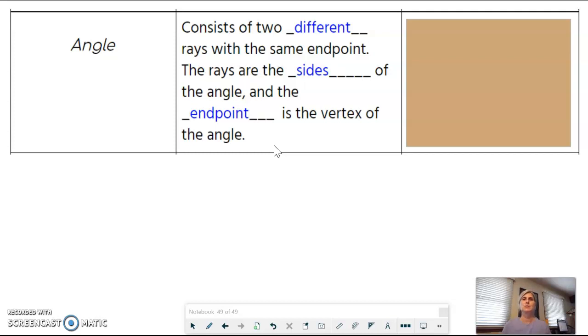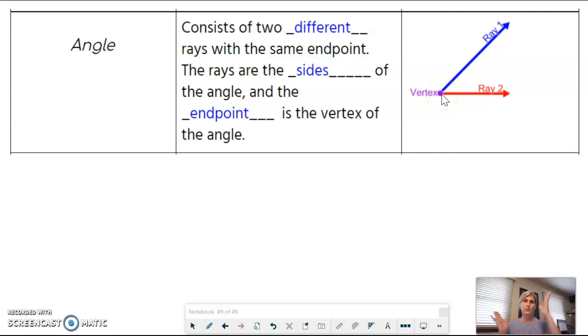An angle consists of two different rays with the same endpoint. Rays are the sides of the angle and the endpoint is the vertex of the angle. For your picture, you're going to draw two rays. Notice they have an endpoint and going in one direction forever, they come together at the vertex. That is an angle.